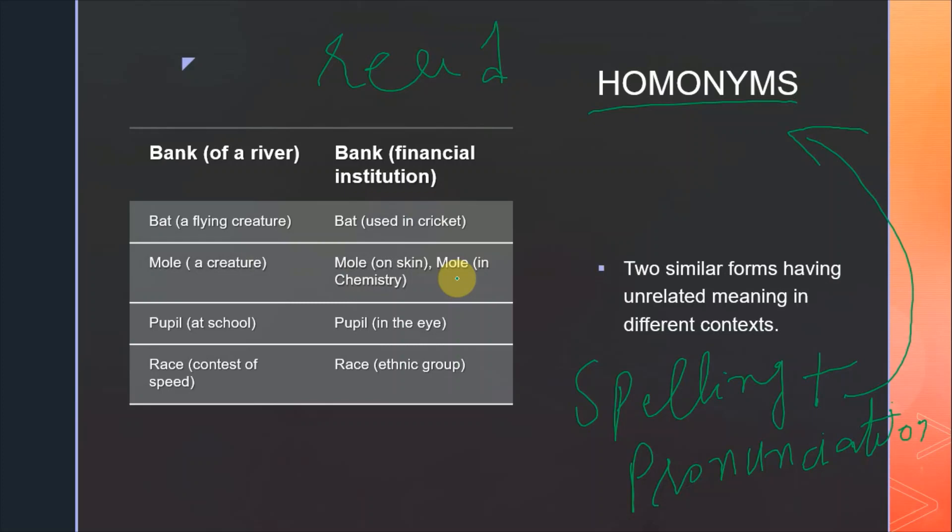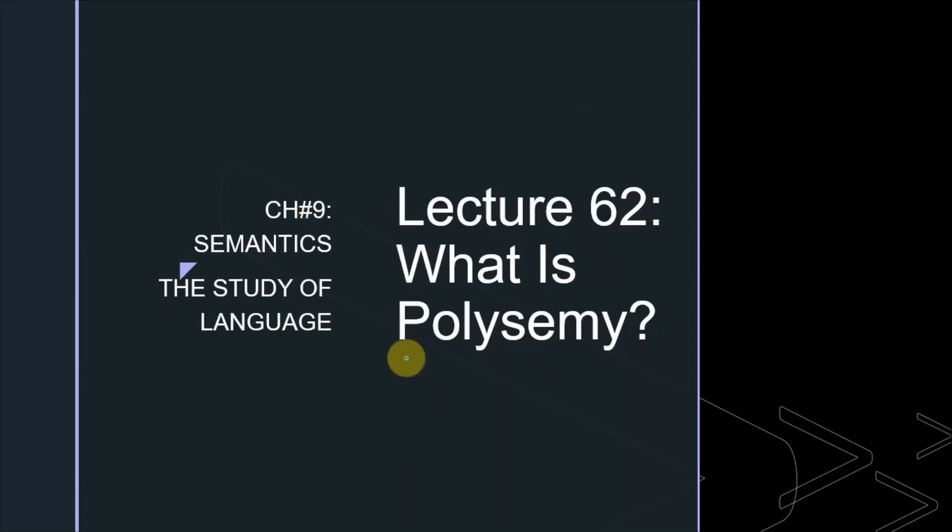In school, people call students pupils, and if some colleagues or researchers also call pupils, which is the part in the eye. And if you are doing a race like running or motorcycle or car racing, that's one race, and ethnic group is also a race. So we get a lot of homonyms where the forms are the same but meaning is different. So this was today's lecture and the next lecture is what is polysemy.